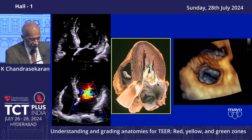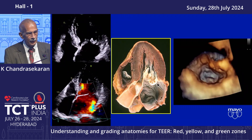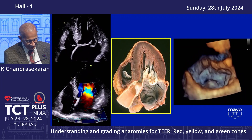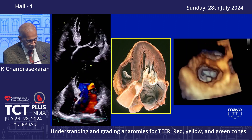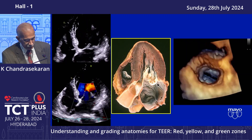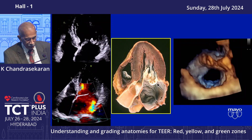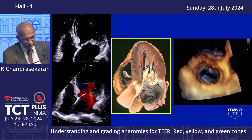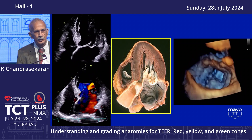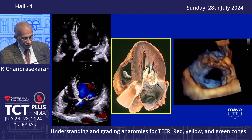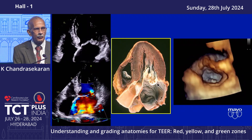With 3D surface imaging you get a panoramic view of all leaflets and segments simultaneously. You can see the ruptured chord and confirm this is an isolated P2 — diseased but with a larger surface area. The leaflet tip is fine, no calcium, and the coaptation length and width are adequate. This clearly points to placing one large clip or two smaller clips. This fits into the green zone — the ideal starting case for anyone beginning transcatheter mitral repair.